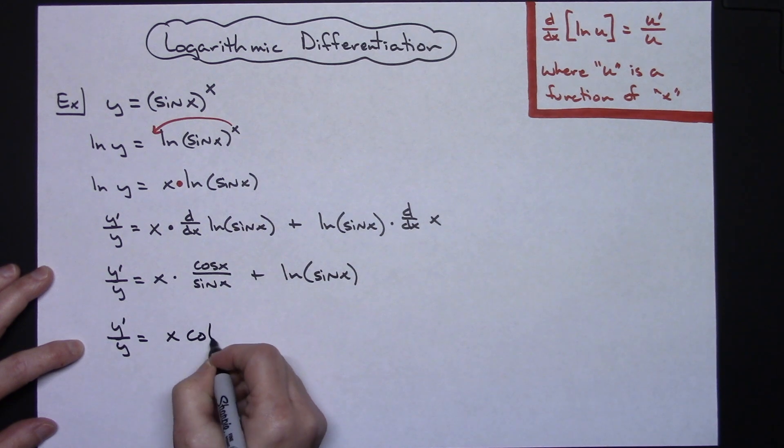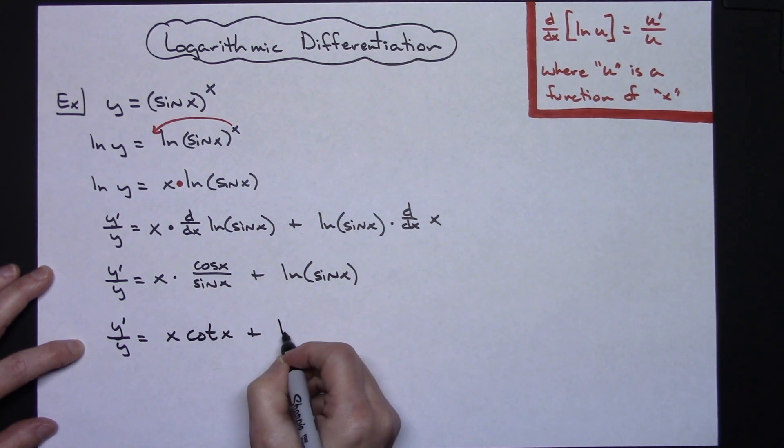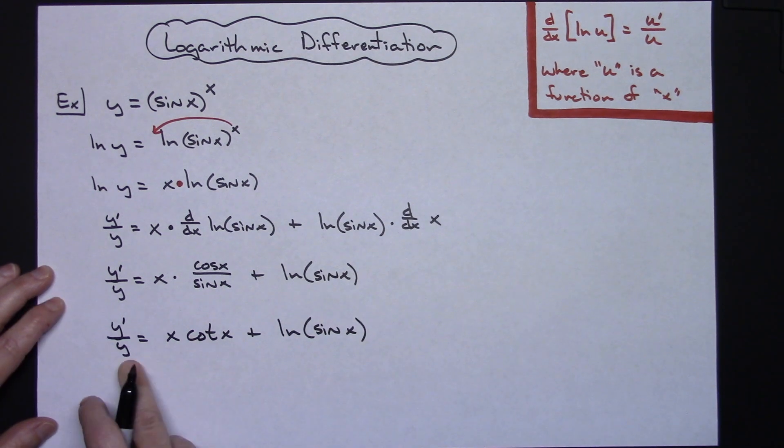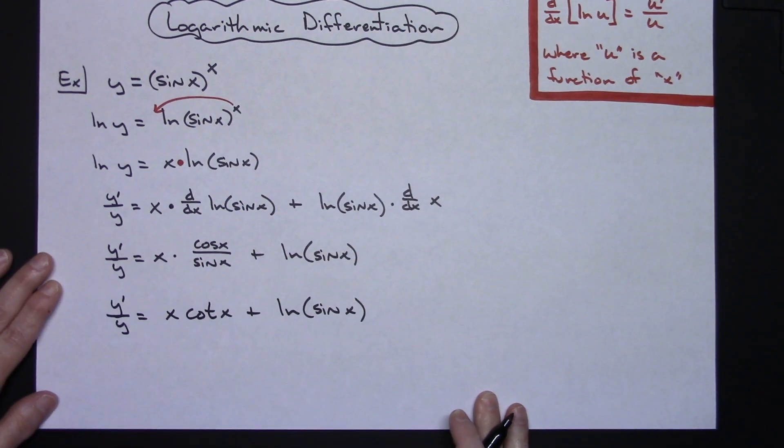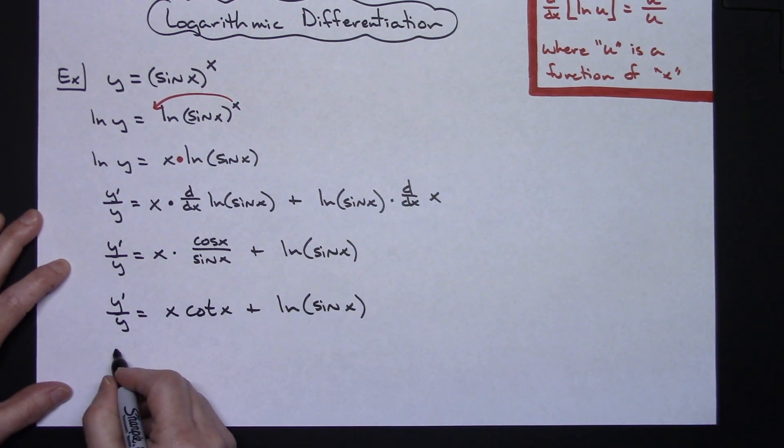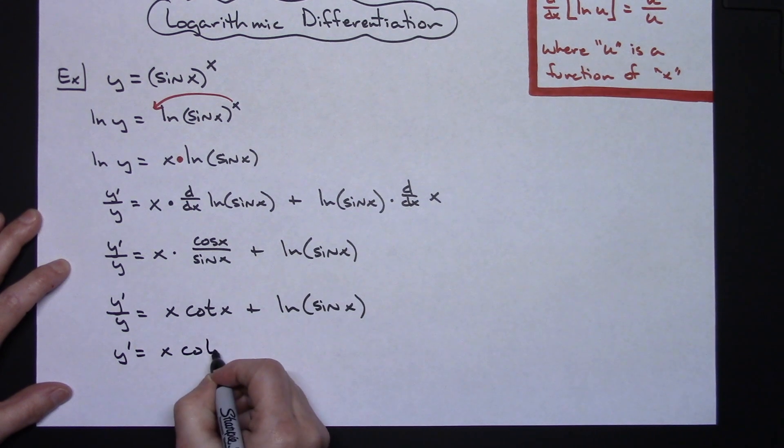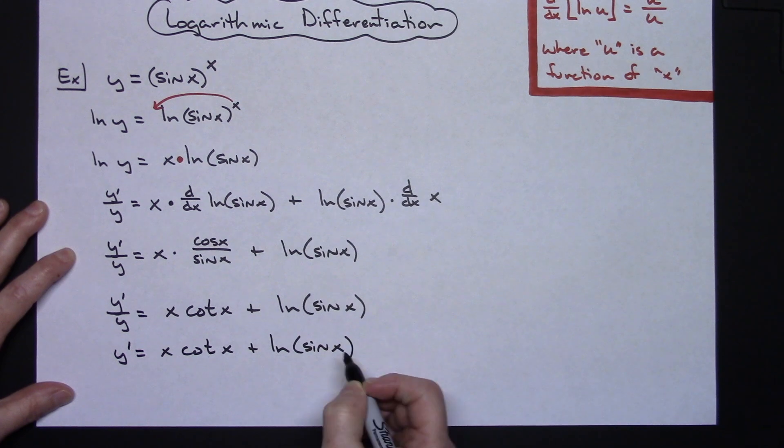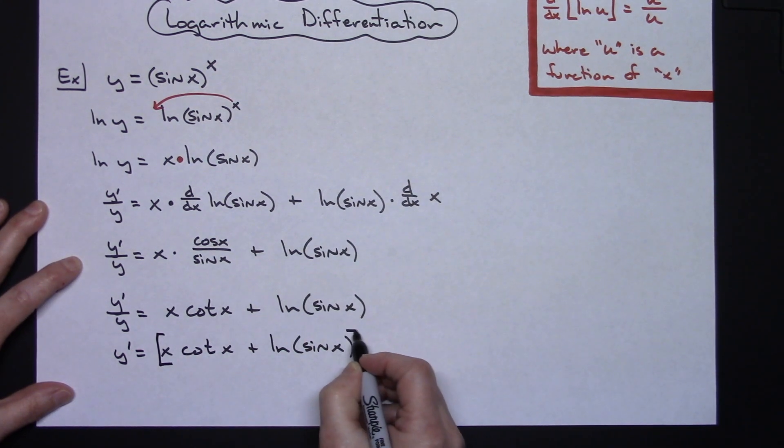I'll have y prime over y equals x times cotangent of x plus natural log sin x. I need to solve for y prime which means I'm going to multiply both sides of the equation by that y. So then I'm going to have y prime equals x cotangent x plus natural log sin x.